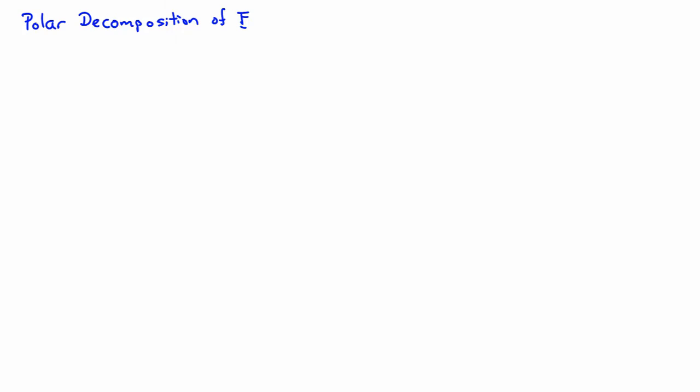In this video, I'd like to talk about the polar decomposition of the deformation gradient F. I'm just going to set it up and talk about it — I'm not going to prove the decomposition here; I have another video for the proof of the polar decomposition theorem. So what the polar decomposition of F tells me is that I can write F in one of two ways: as the product of a tensor R times a tensor U, or as the product of a tensor V times that same tensor R.